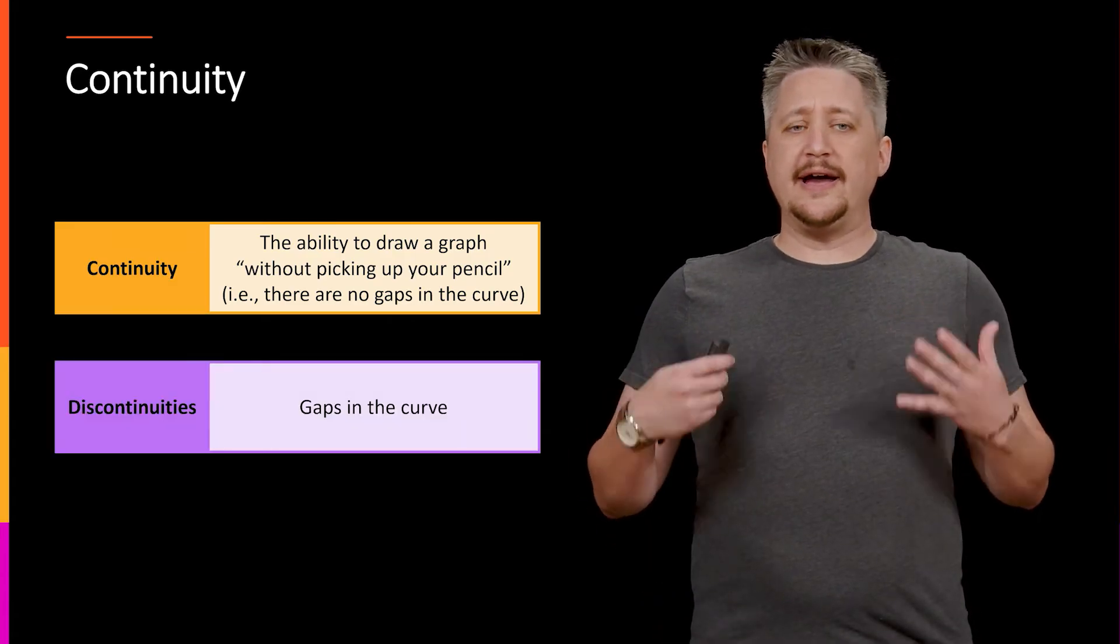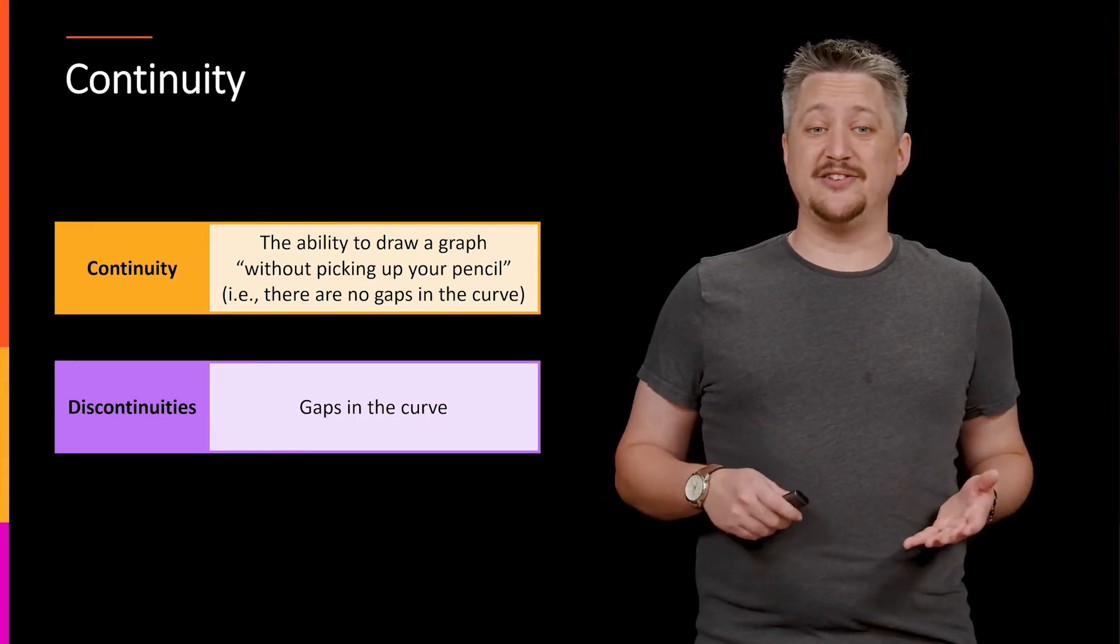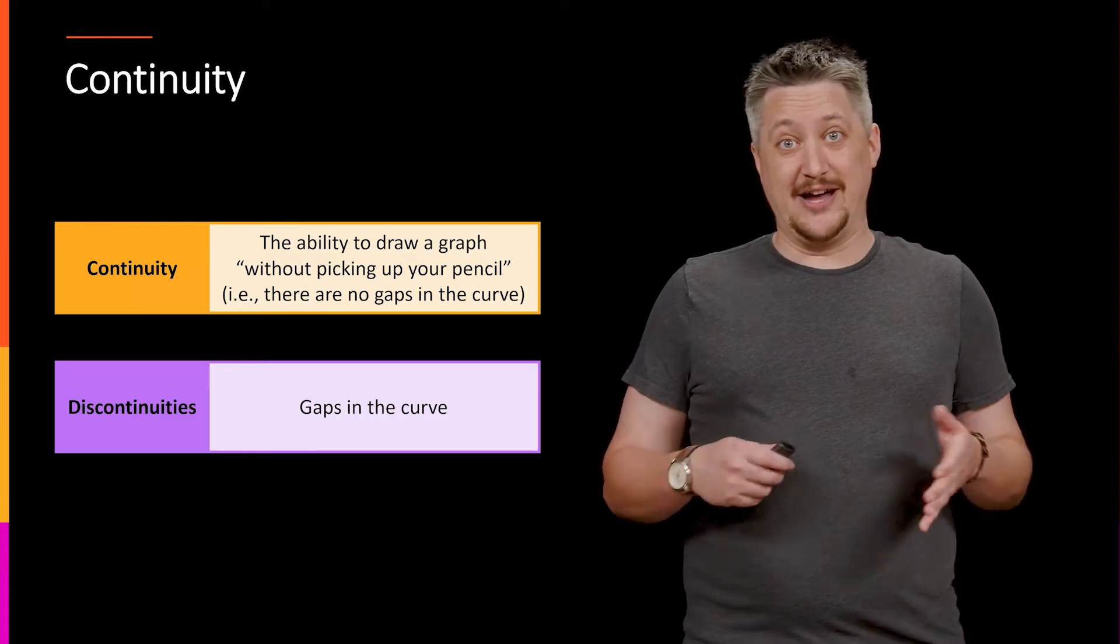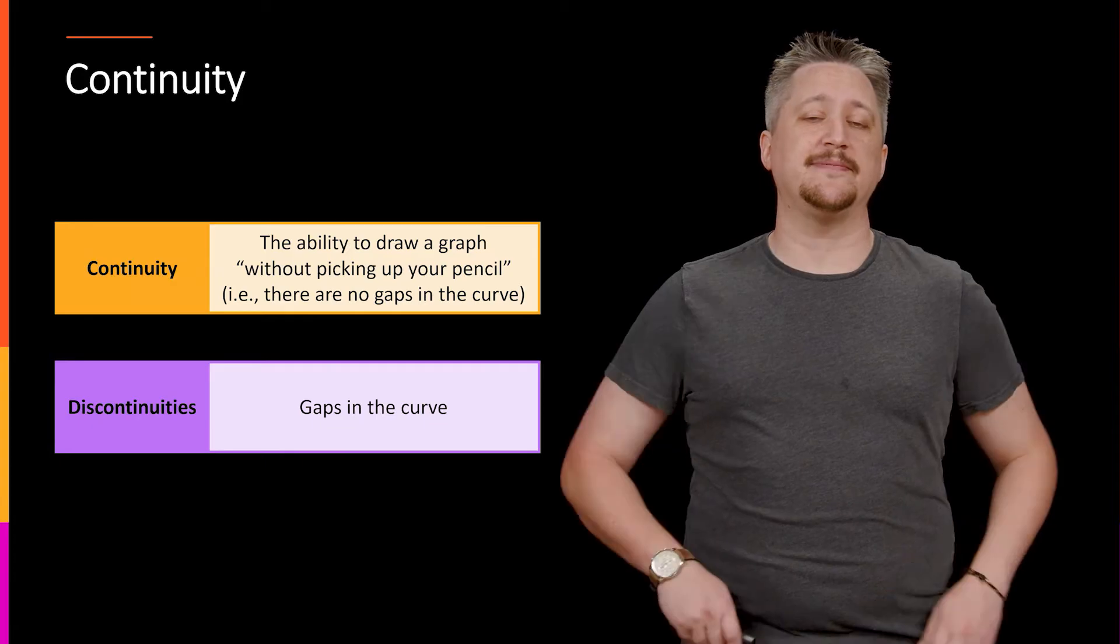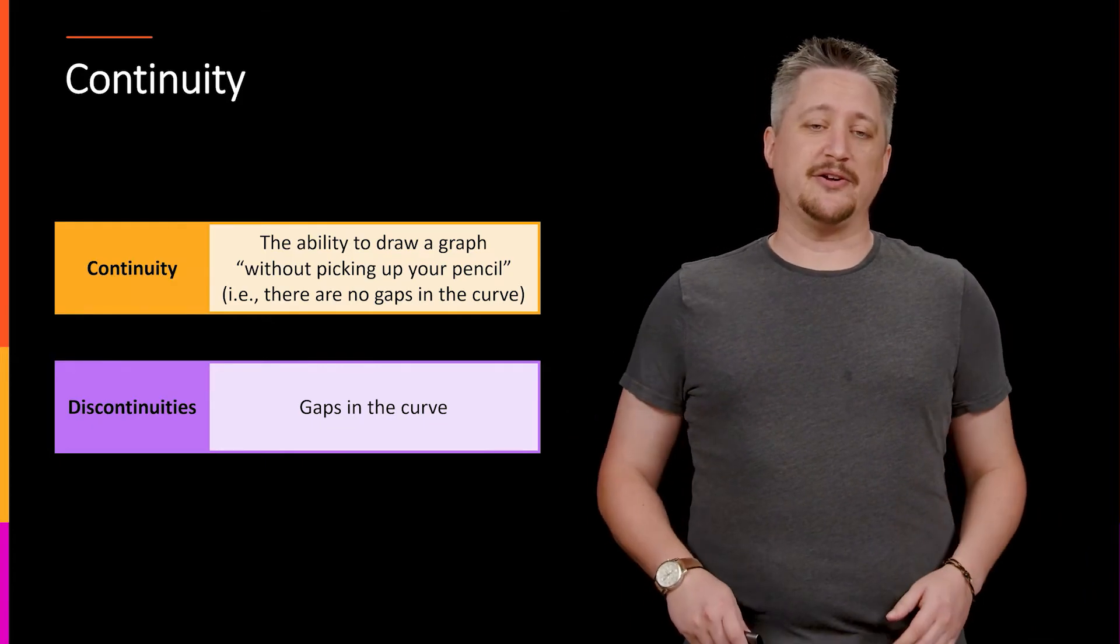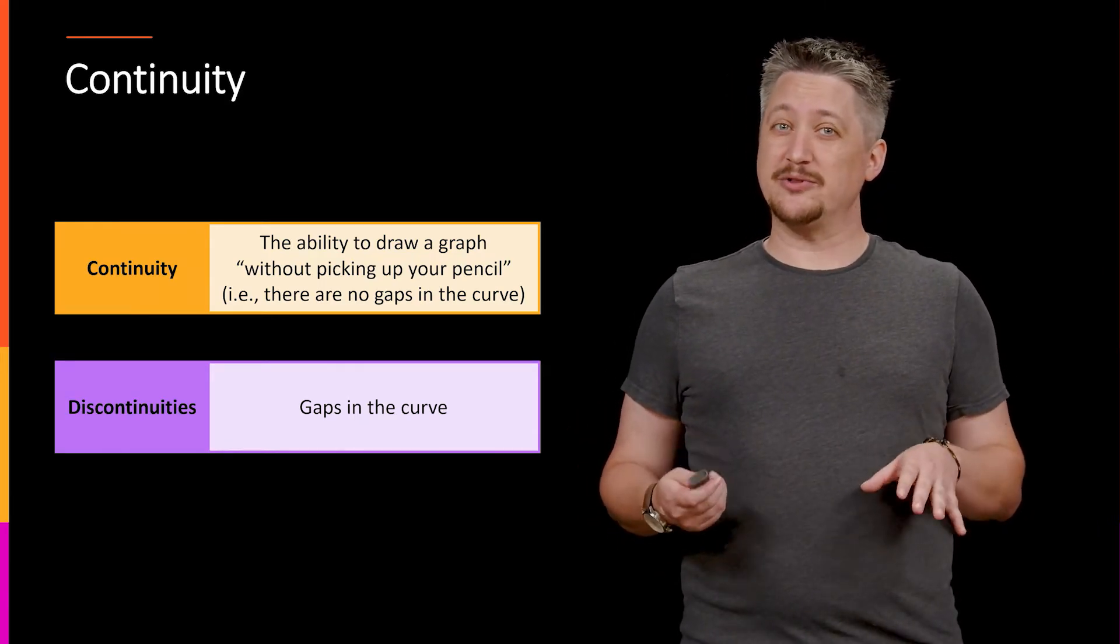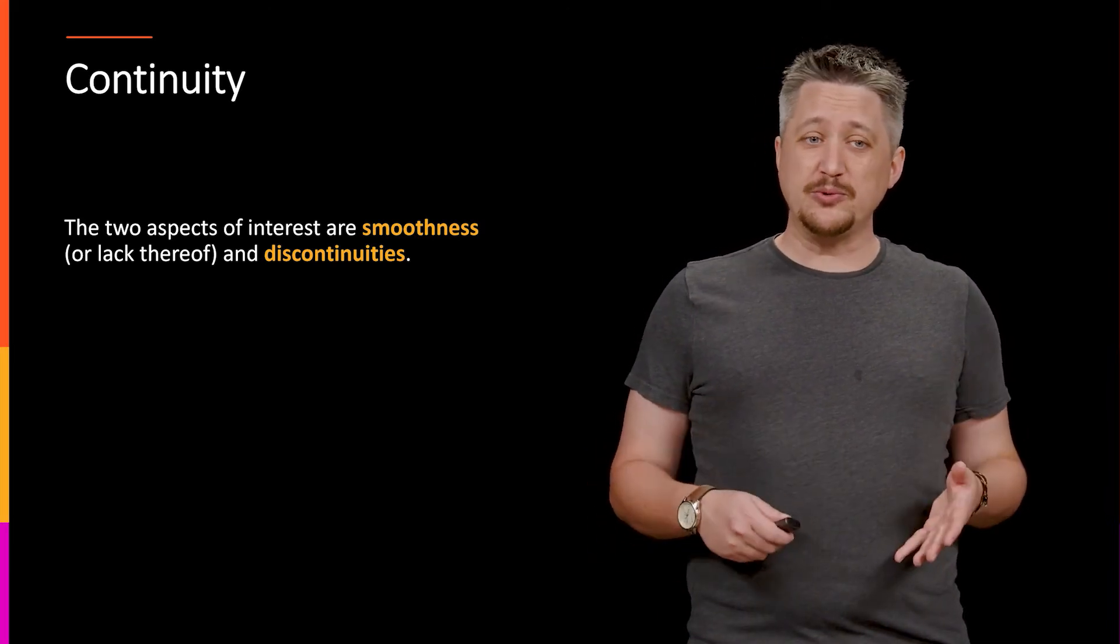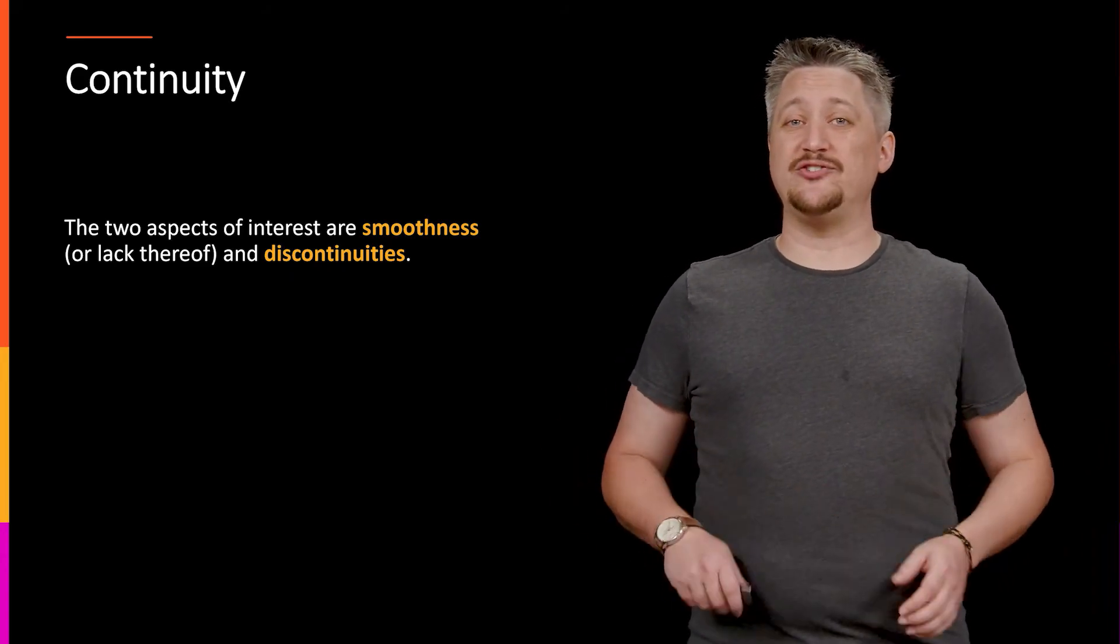Okay, so as mentioned, we're doing continuity. Continuity tends to be defined with the discontinuity, which understandably—continuity is not having gaps, so discontinuities are those gaps that are occurring in the curve. And they come in a number of flavors, which is one of the things we're going to talk about here. But the flip side, the other side of that coin with continuity, is the smoothness. So the two aspects of interest we have are smoothness or potentially lack thereof, and the actual discontinuities and the nature of the discontinuities.